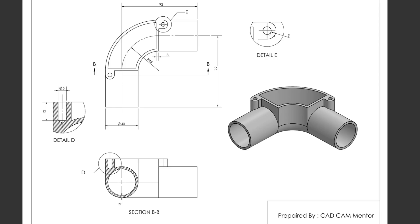That's our lecture number three in SOLIDWORKS 3D modeling. In this lecture, we will learn how to draw this simple 3D model in SOLIDWORKS with the help of 2D drawings. With the help of these different types of views and different dimensions, we will draw a simple 3D model in SOLIDWORKS.